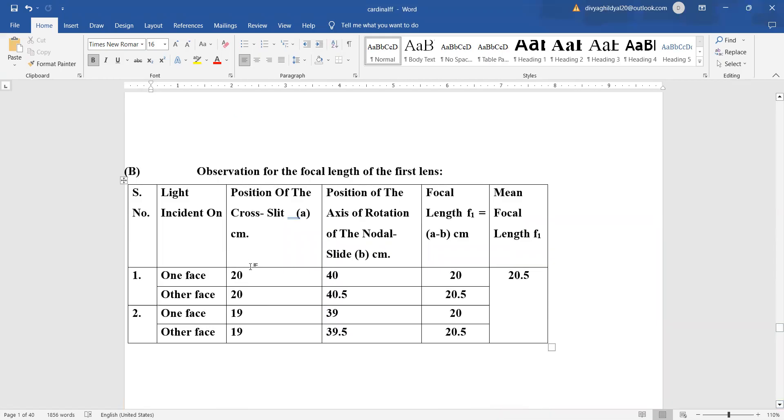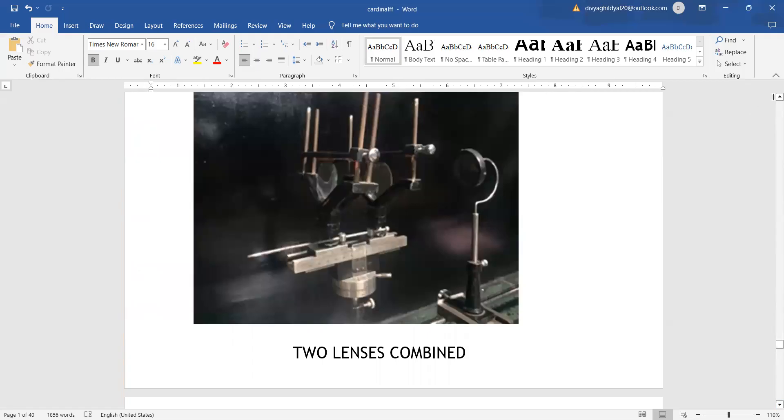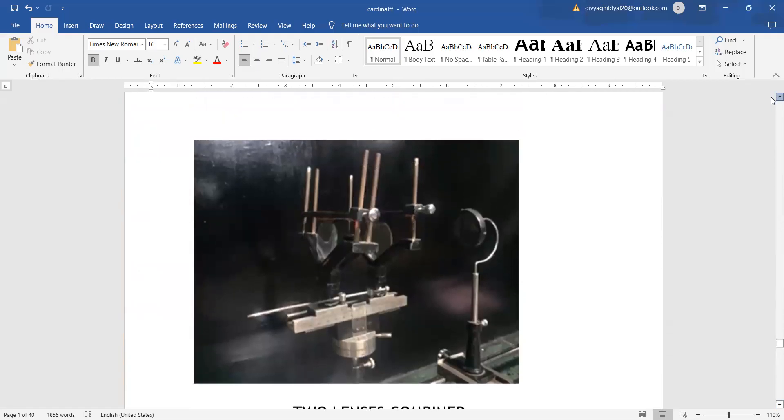At 20 cm of the optical bench, the cross slit was there. At 40 cm, the sharp image was obtained. The difference between the two gives the focal length of the system. This way, we will take two, three, or four readings with both faces of the convex lens, and similarly we will do it for the second lens.